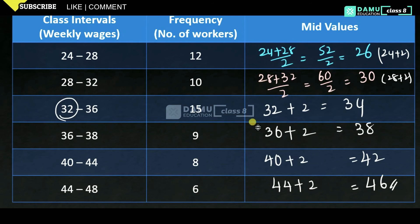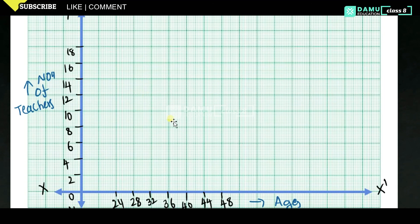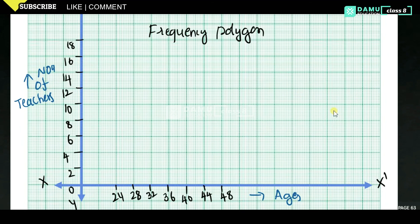Now we are going to construct the frequency polygon. Frequency polygon means using a scale or ruler to join the midpoints. For the class 24–28, the frequency is 12, and the mid value is 26. We locate the point at (26, 12) on the graph.